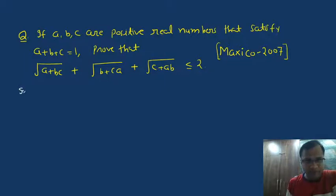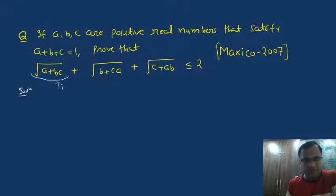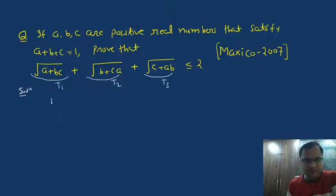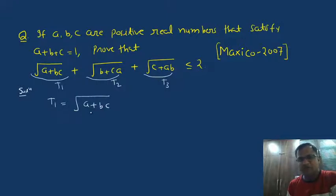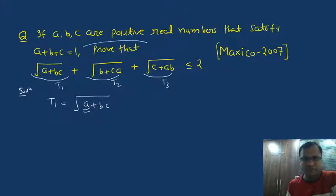What can I do to solve this problem? Look at the first term on the LHS — this is the first term, this is the second term, and this is the third term. The first term is root of a plus bc. If we substitute the value of a from the given condition, we can write a equals 1 minus b minus c.